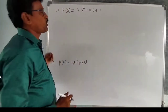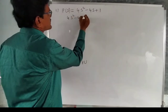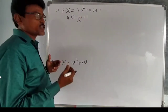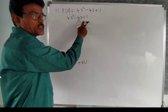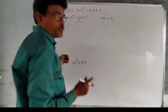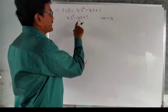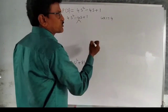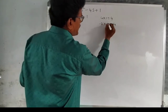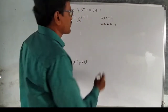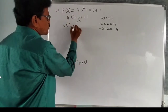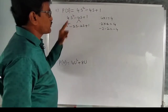Let us find the factors of 4s² minus 4s + 1 by splitting the middle term. Multiply the coefficient of s² (which is 4) with the constant (1) to get 4. We need two numbers that multiply to 4 and add to minus 4. Those are minus 2 and minus 2. So we write: 4s² minus 2s minus 2s + 1.